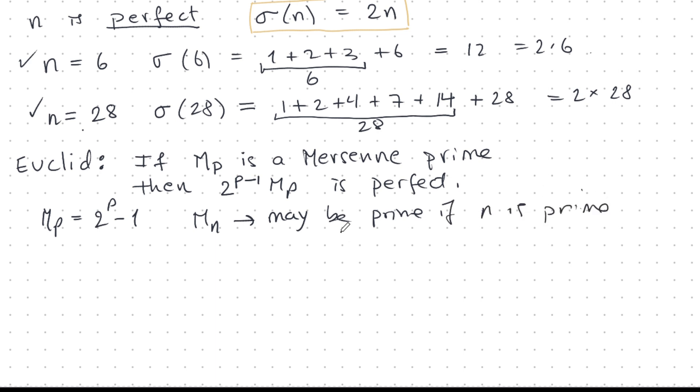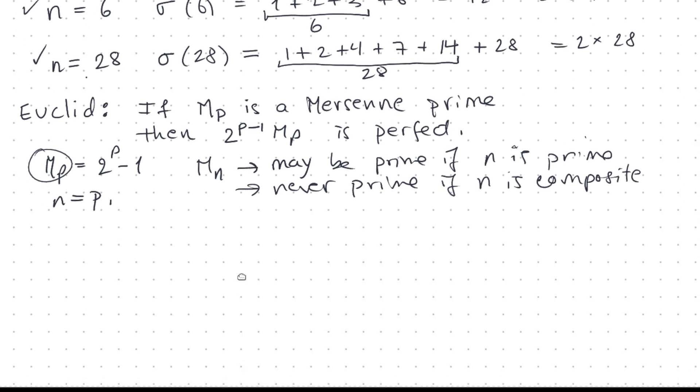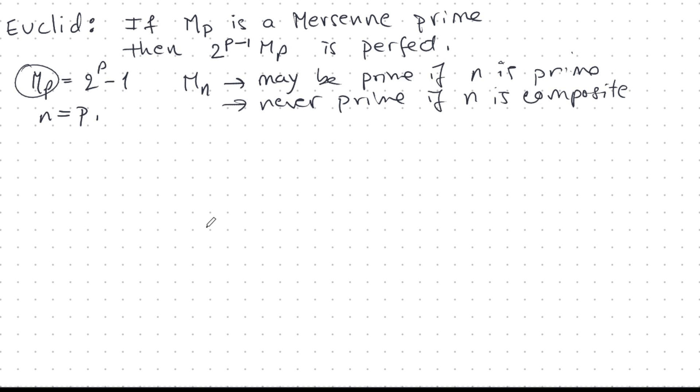In general, Mn may be prime if n is prime, but it's never prime if n is composite. So we don't really want to think too much about the composite n. So let's just take n is p, n is always prime. So at least then the Mersenne number has a chance of being prime. So Euclid said that if indeed it is prime, then I can make a perfect number out of it.